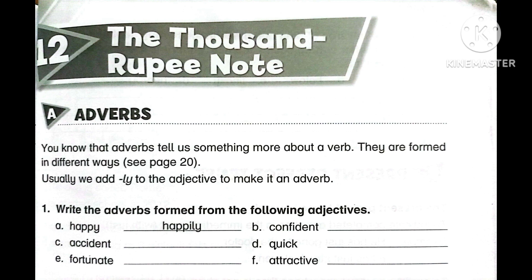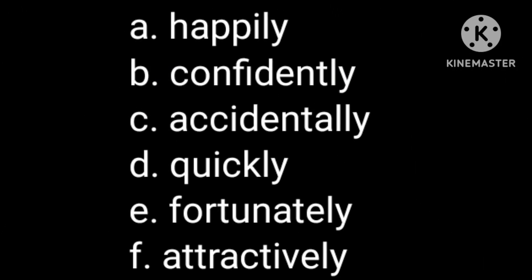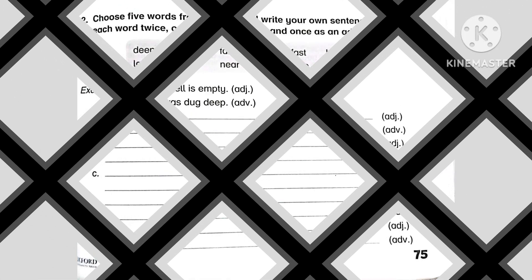Six adjectives are given and we have to convert them into adverbs. The words are: happy, confident, accident(al), quick, fortunate, and attractive. When we change these to adverbs, they become: happily, confidently, accidentally, quickly, fortunately, and attractively.